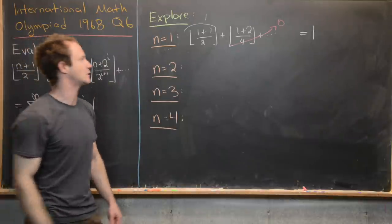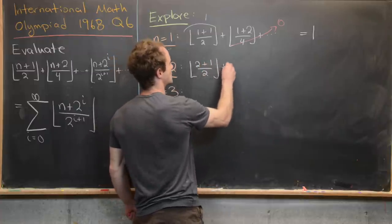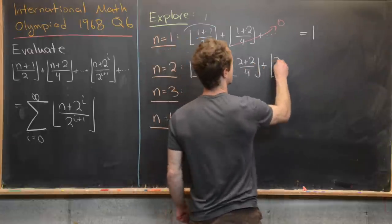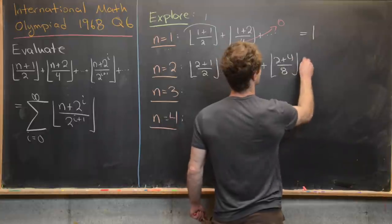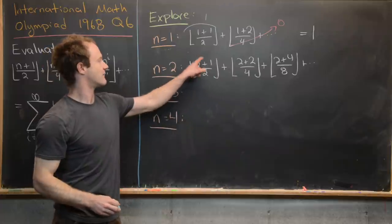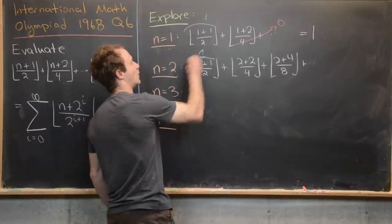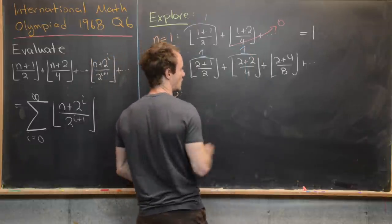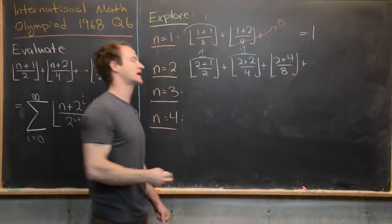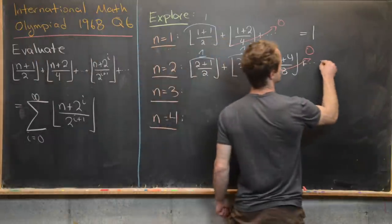For n = 2, we have the floor of 3/2 plus the floor of 4/4 plus the floor of 6/8 plus dot dot dot. The floor of 3/2 is 1, the floor of 1 is 1, and the floor of 6/8 is 0. So in the end we have 1 + 1, which is 2.